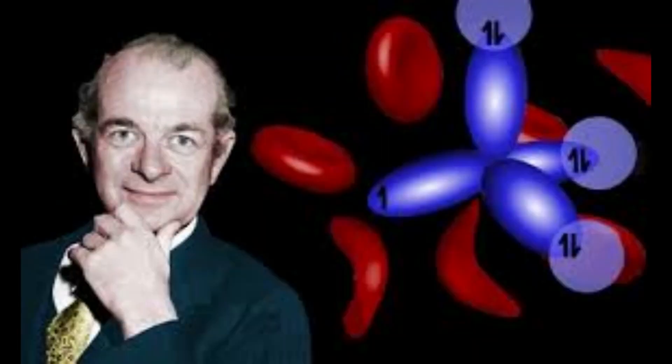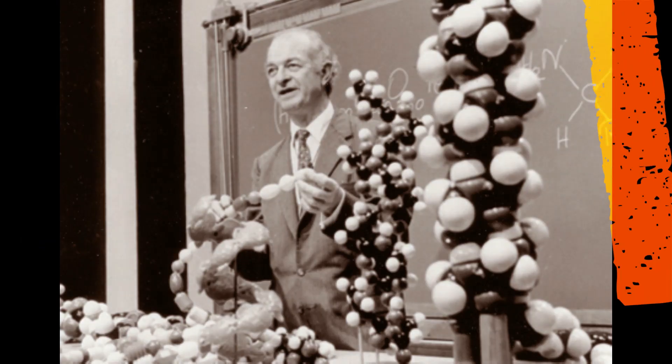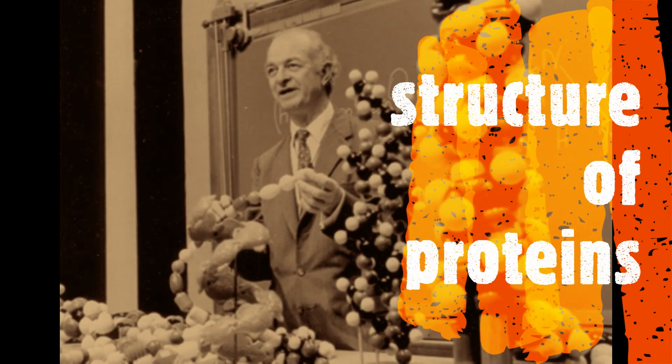Pauling was also interested in the organic part of chemistry. By the mid-1930s, he was performing successful magnetic studies on the protein hemoglobin. He developed further interest in proteins and, along with biochemist Alfred Mirsky, started his research. In the year 1936, he and Alfred published the paper on General Protein Structure, in which they stated that protein molecules generally coil into specific configurations but uncoil when some weak bonds break.